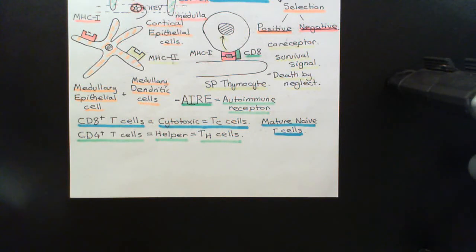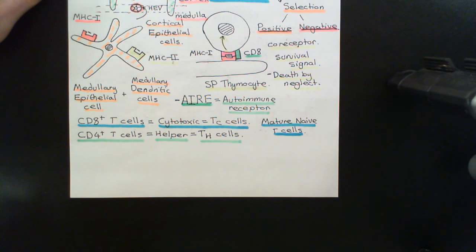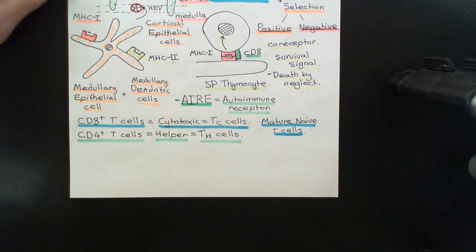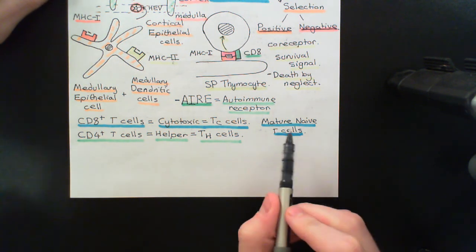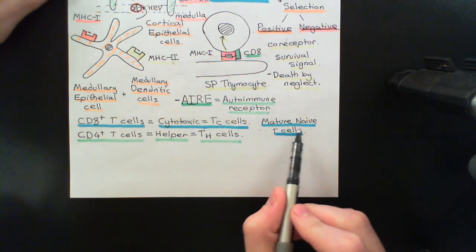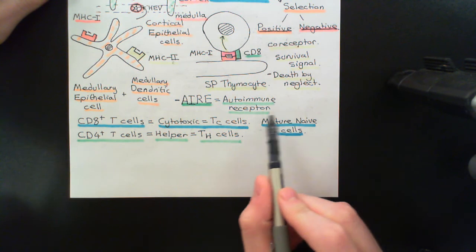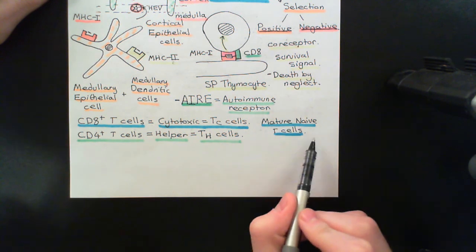Welcome to part 15 of this video on the immune system. We're currently in the process of discussing T-cell production. The point we've got to now is that the thymus gland is putting into the bloodstream these mature, naive T-cells, and these are now the finished product.